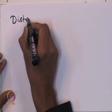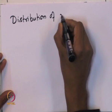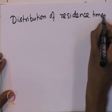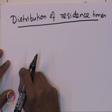Starting from this lecture, for the rest of the course, we will be looking at non-ideal reactors and how to characterize non-ideality in reactors. We will be particularly looking at the distribution of residence time for chemical reactors.